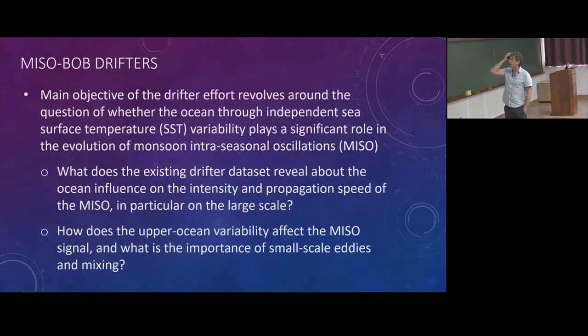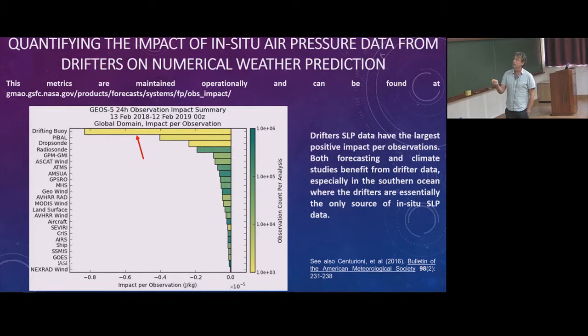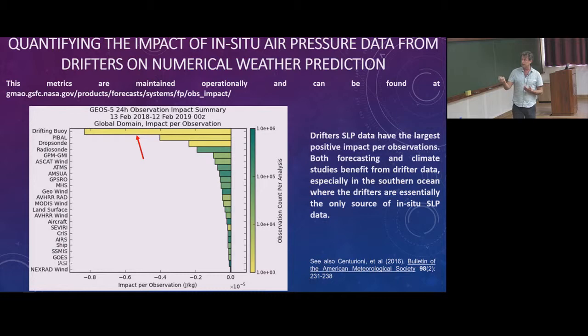In terms of the plan for Mitsubov moving forward, those are the objectives of our drifter work. All drifters will have a barometer installed, because one of the focuses is the intra-seasonal oscillation of the monsoon, so surface sea level pressure data are important. We want to observe the circulation of the atmosphere with in-situ data, and we know that drifter data have a huge effect on numerical weather prediction.